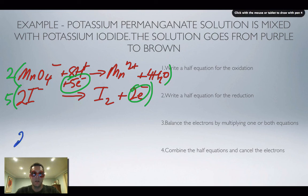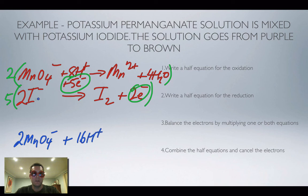We've got two MnO4 minus and 16H plus and 10I minus making two Mn2 pluses and eight waters and five I2s.